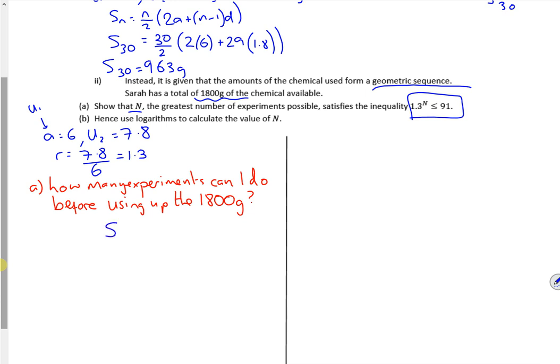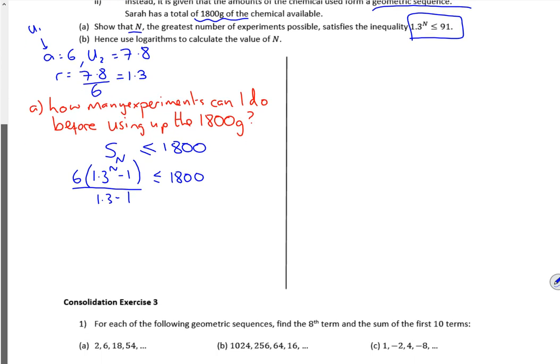So I'm going to look at the sum of n, now they've used capital N. So it's less than or equal to 1800 up there. R is 1.3, so I'm going to use the r minus 1 formula. So a is 6, 1.3 to the power n minus 1, and 1.3 minus 1 is less than or equal to 1800. So this is where it works to your advantage choosing the right equation. Because it can just get properly messy with negatives on the bottom when you're faffing around with inequalities.